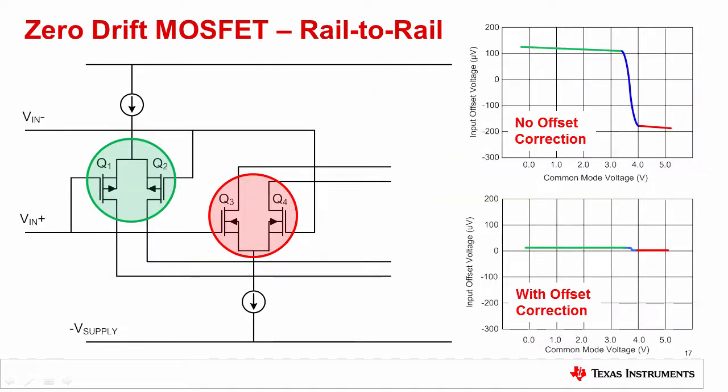Zero drift amplifiers with rail-to-rail inputs actually use the same complementary N-channel and P-channel input configuration as shown earlier in the video. So they do exhibit some degree of crossover distortion. However, the offset of the amplifier is corrected by digital calibration, so the magnitude of the offset transition and the crossover distortion is greatly diminished.